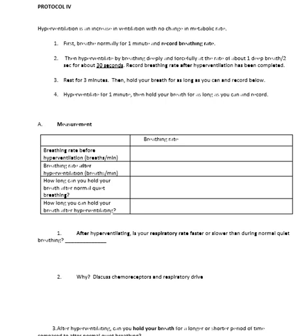The fourth experiment is hyperventilation. Breathe normally for a minute, then hyperventilate — one deep breath every two seconds for about 30 seconds — and then record your breathing rate after hyperventilation. Most people think hyperventilation is just rapid shallow panting, but hyperventilation is actually taking in a lot of air too many times — like every two seconds.